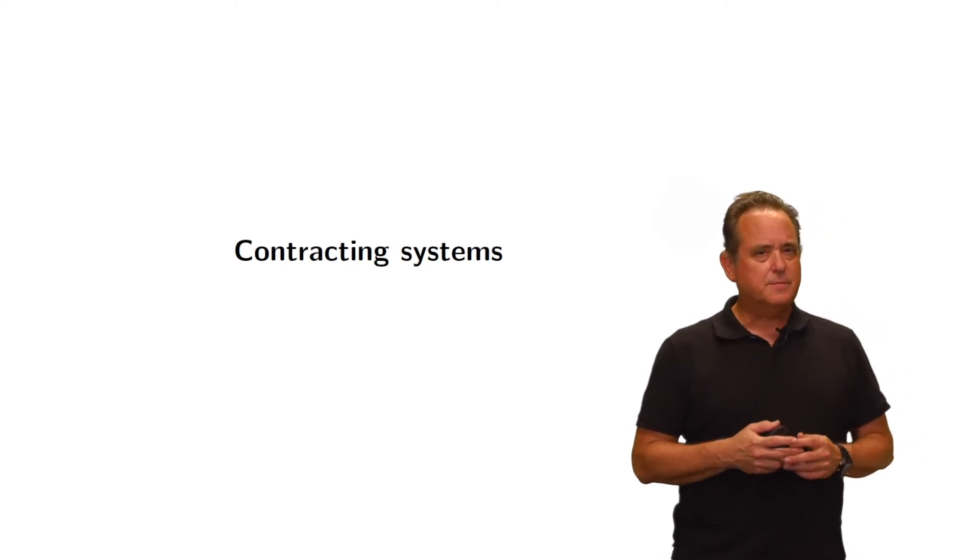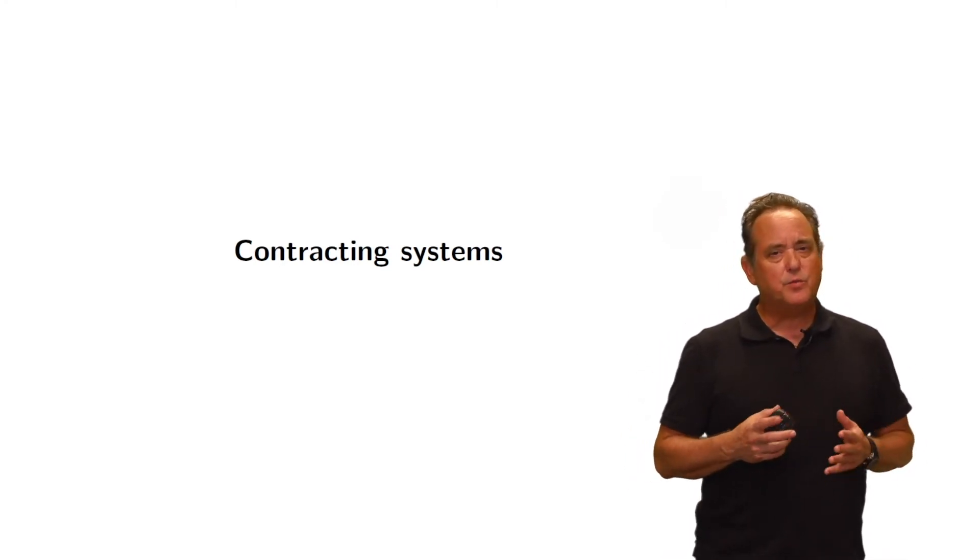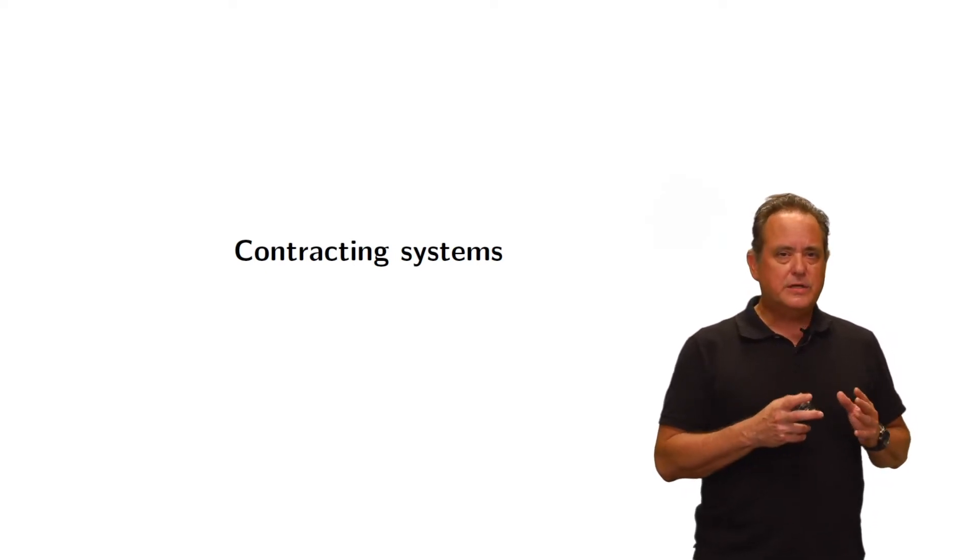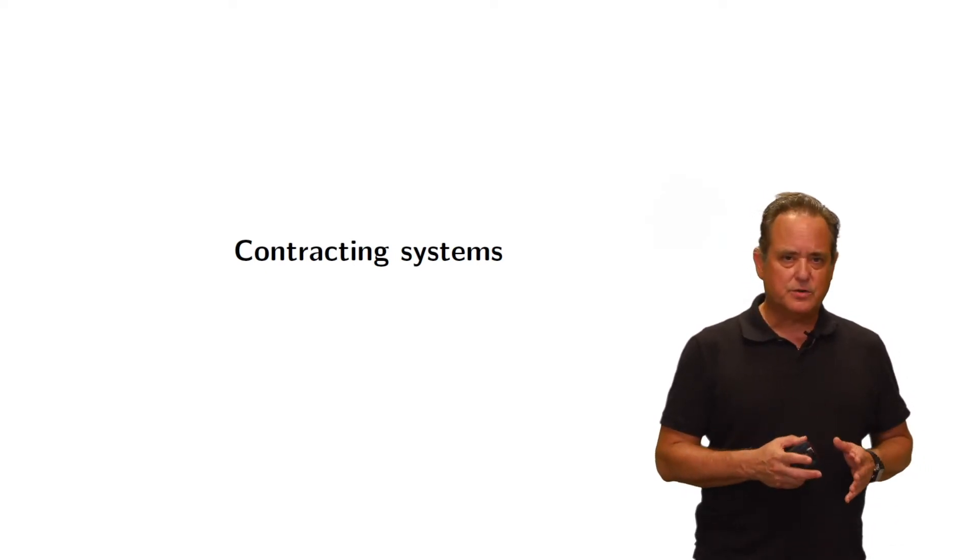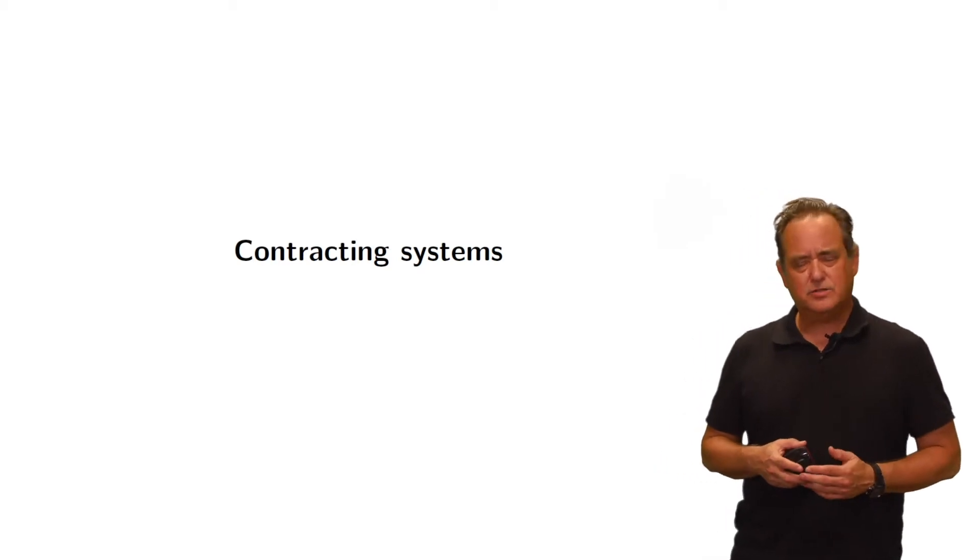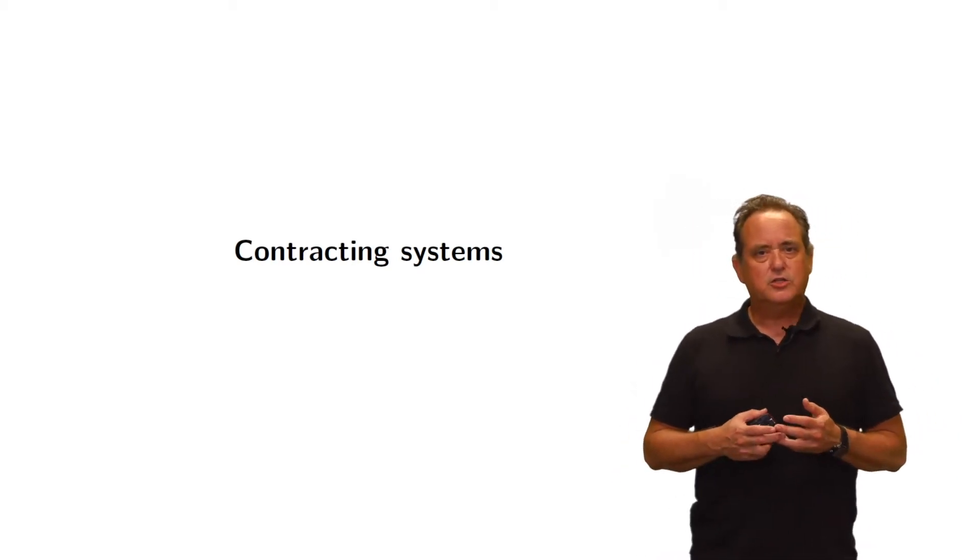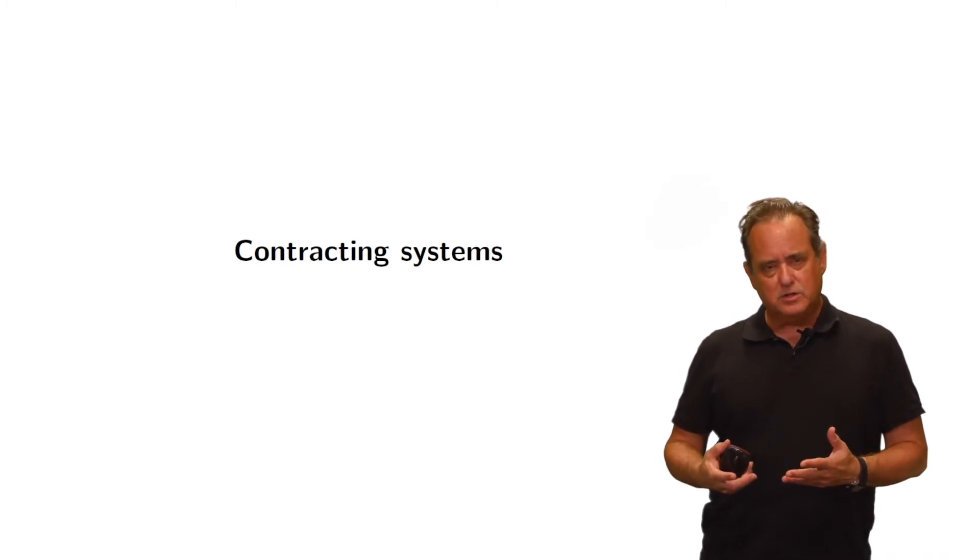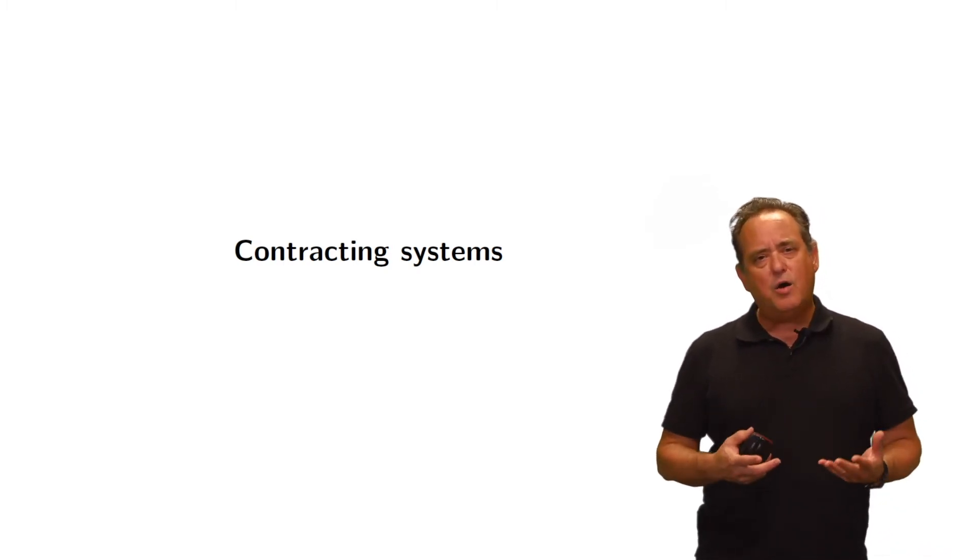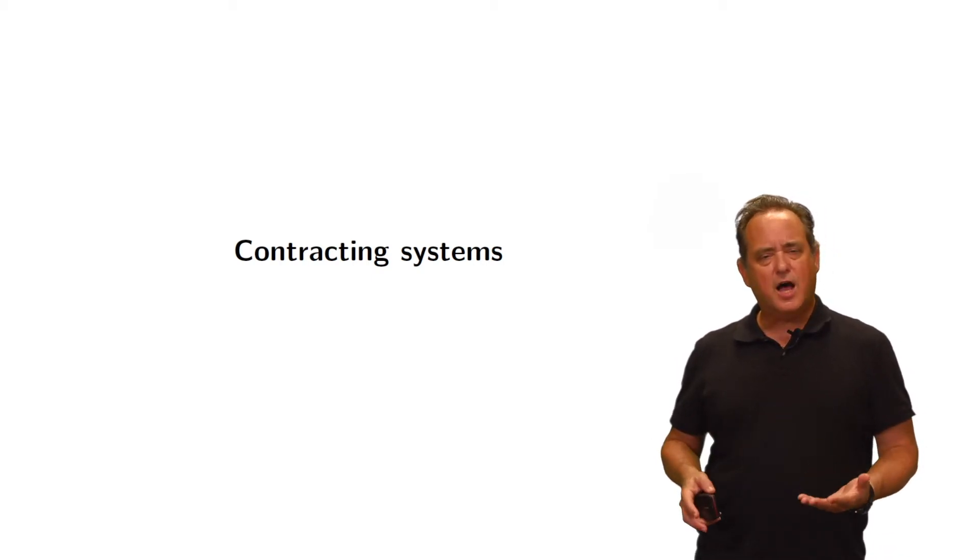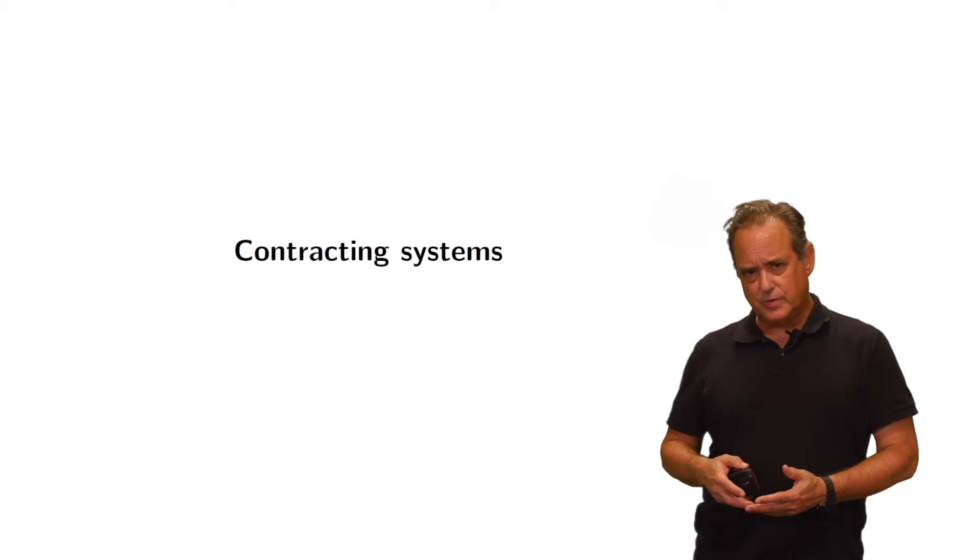So in our last lecture we talked about expectations and risks in a sales transaction and how those expectations and risks are somewhat the same, but also the risks are much higher in an international sales transaction. So what we'll be doing in this part of the course is to talk about how we manage those risks, and the short answer is we're going to use contracts to manage those risks.